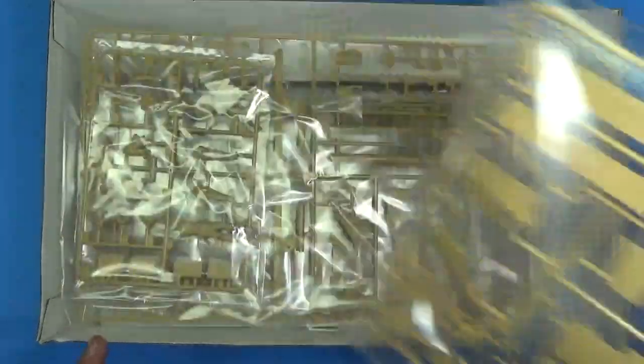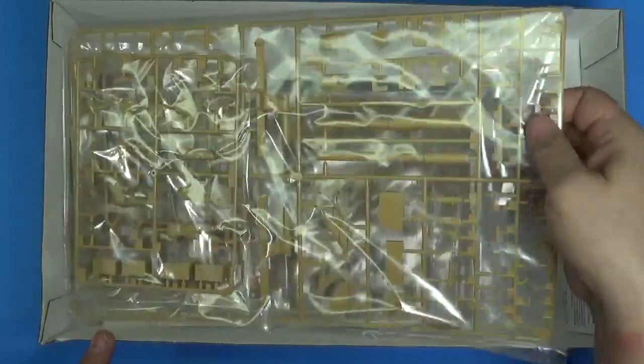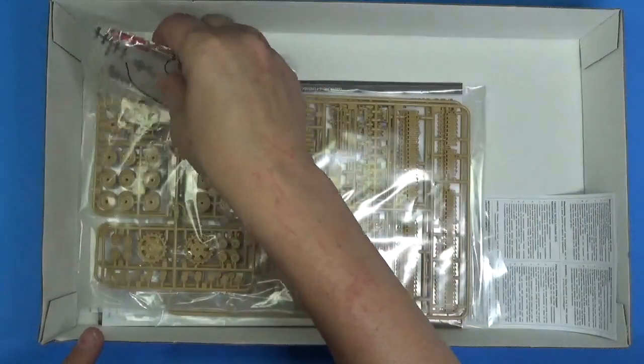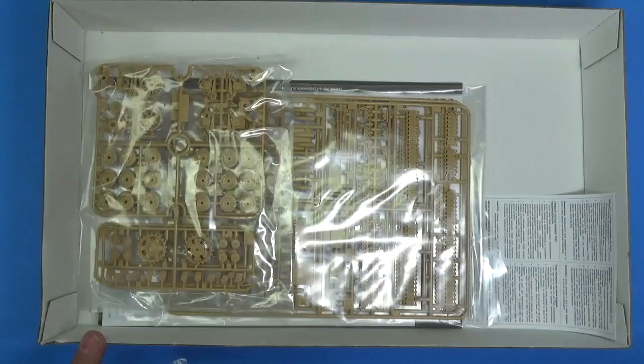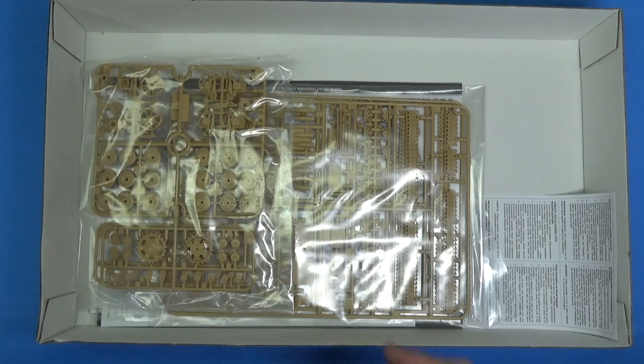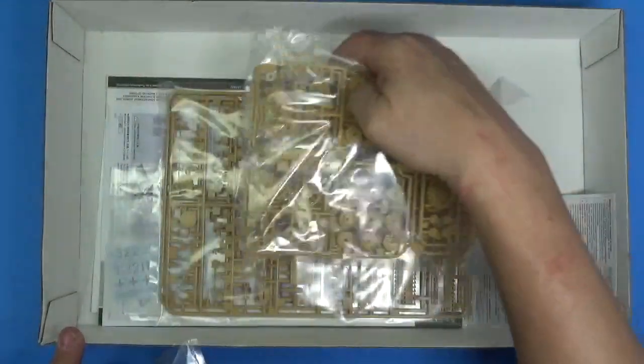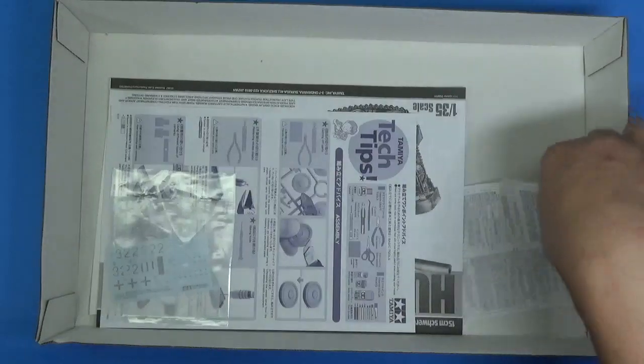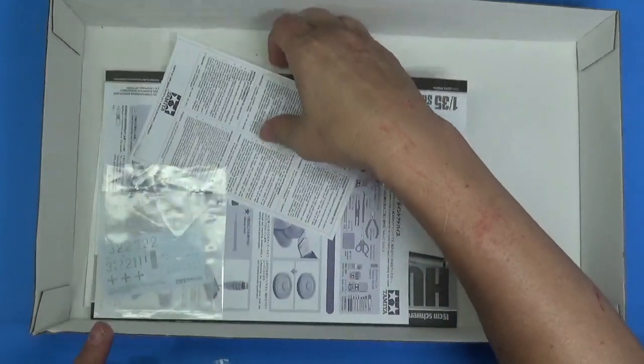Sand color. There's your regular barrel. There's your figures. There's some polycaps. Some mini screwdriver in there. Screws. We'll get to all that. Road wheels. Length and link tracks. Instructions.